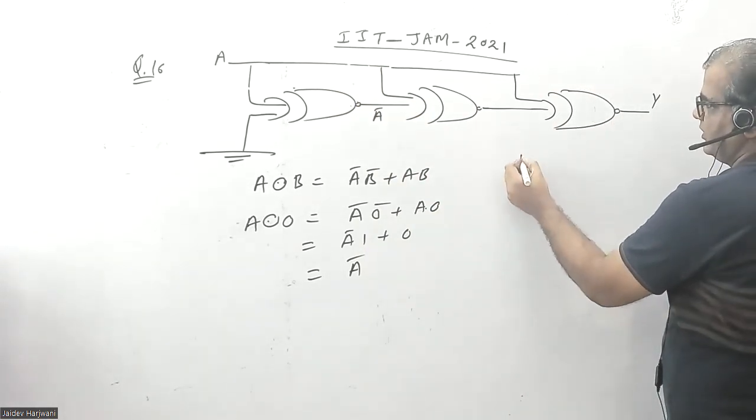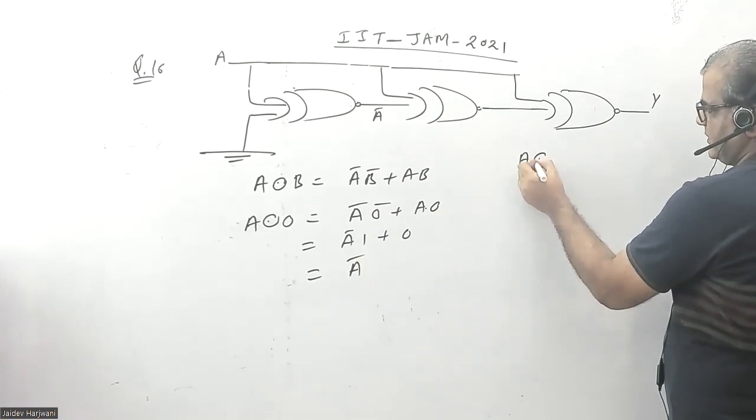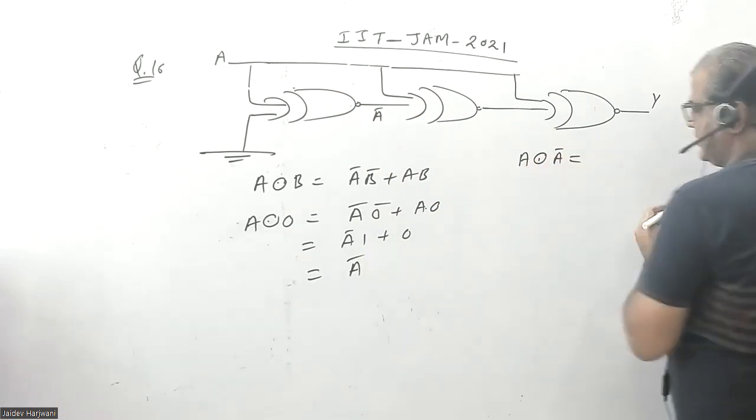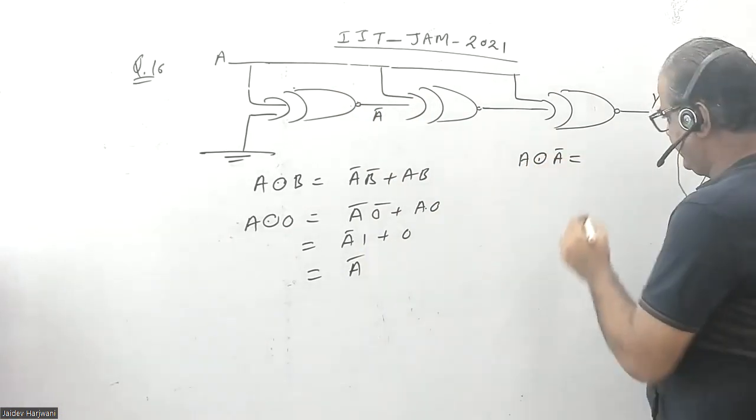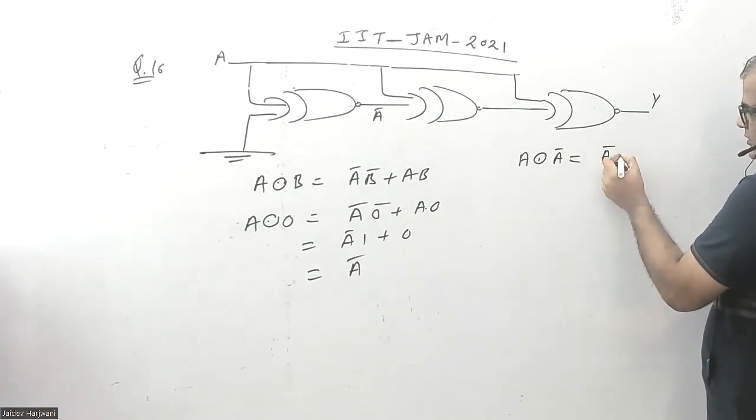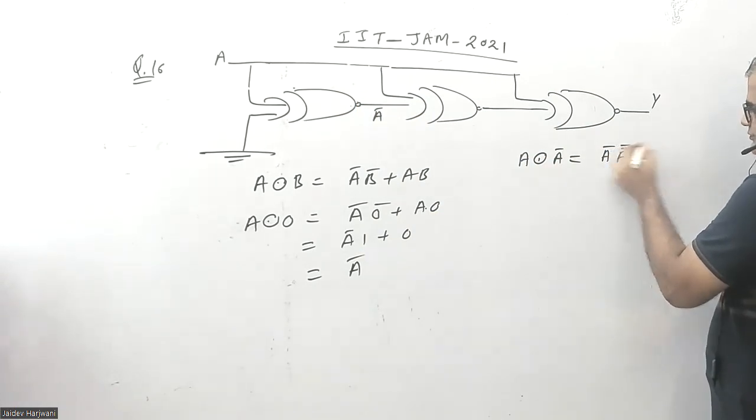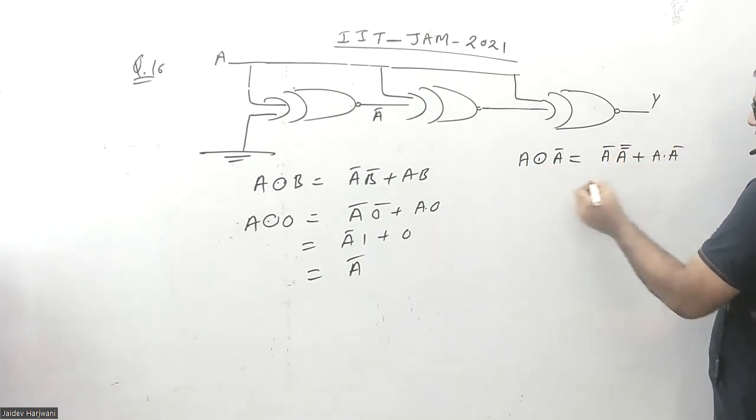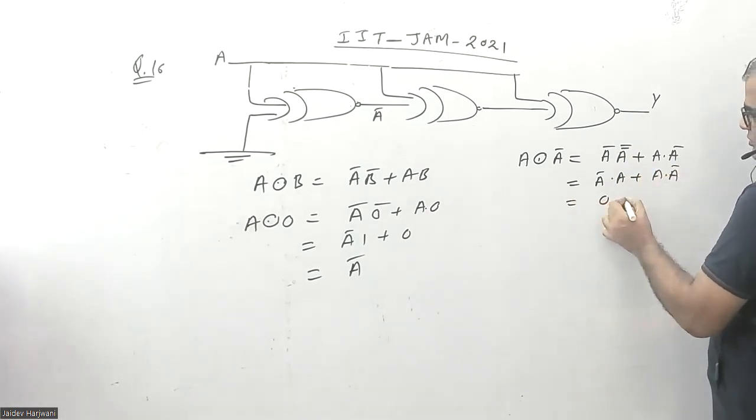So this will give you A XNOR A bar, which is A bar times A bar bar plus A times A bar. This will give you A bar times A plus A times A bar, and this is equal to 0 plus 0, which gives you 0.